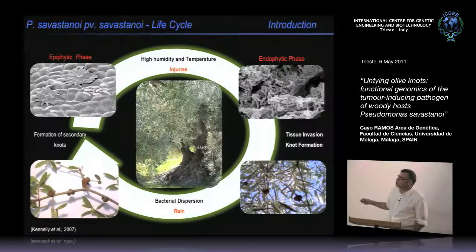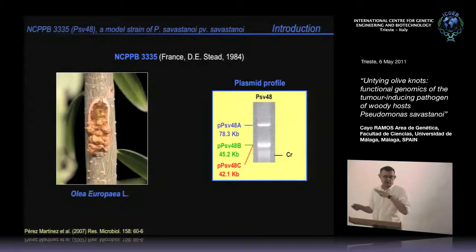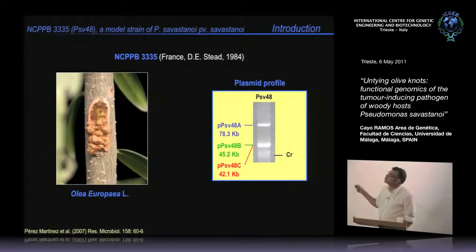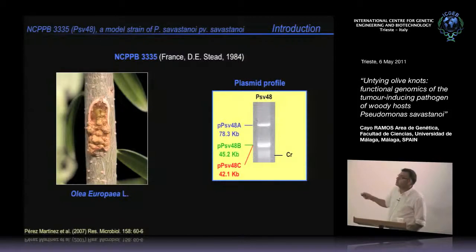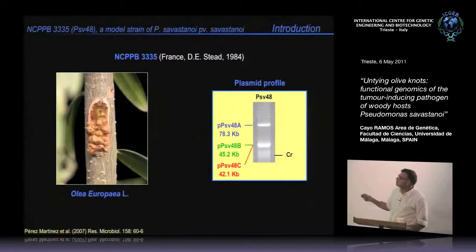Bacterial dispersion usually takes place in rainy seasons, and secondary tumors on the branches are produced. After checking several strains from different countries, we chose as our model strain an isolate from France, isolated in 1984. It is pathogenic and virulent in woody olive plants and contains three high molecular weight plasmids.